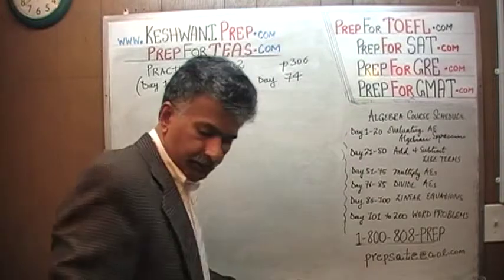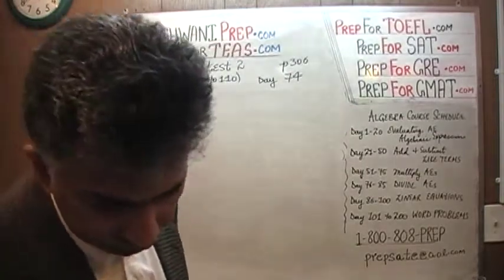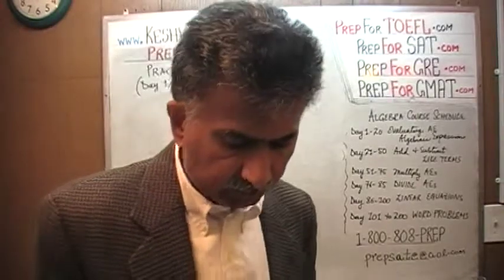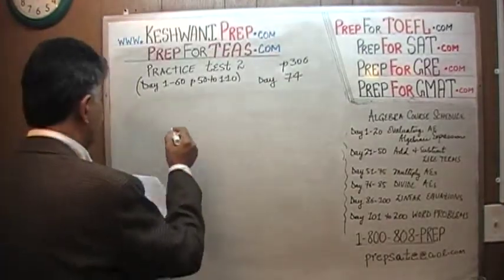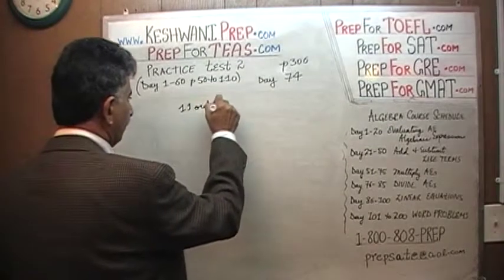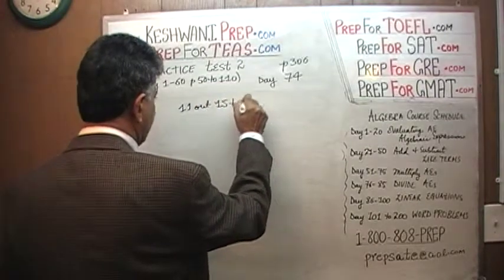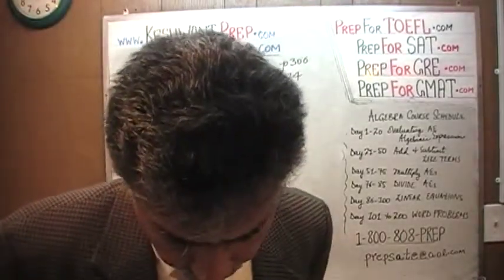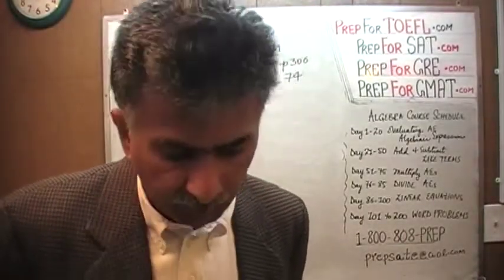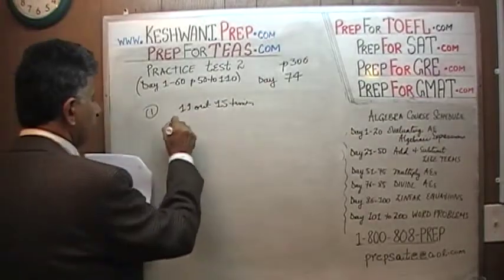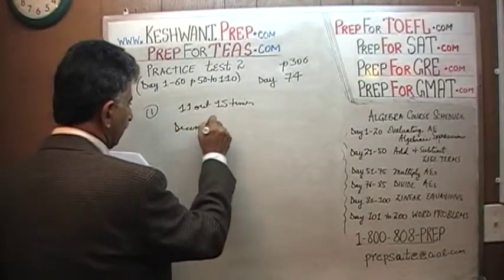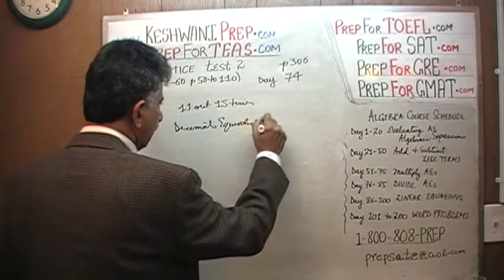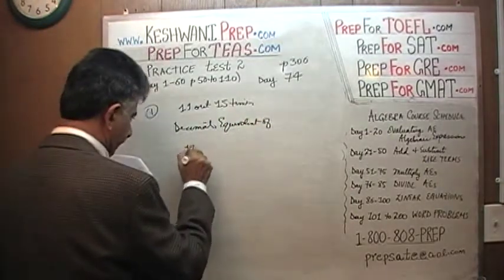Let's take a look. The very first problem says: in a baseball tournament, a boy hits 11 out of 15 times. The question simply is, which of the following is the decimal equivalent of the boy's average? So we are looking for the decimal equivalent of 11 out of 15.